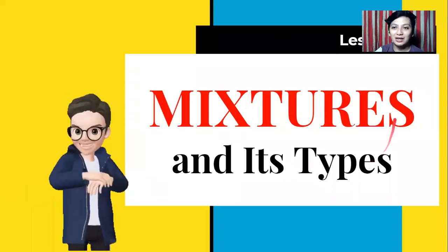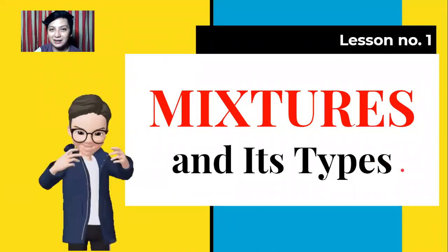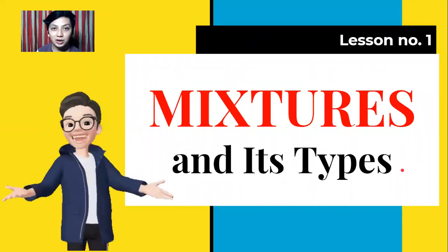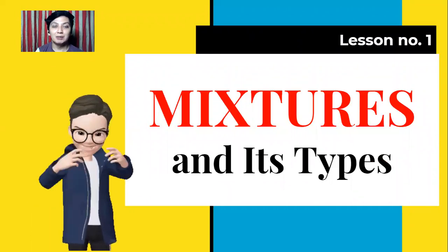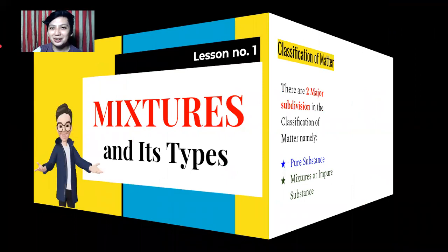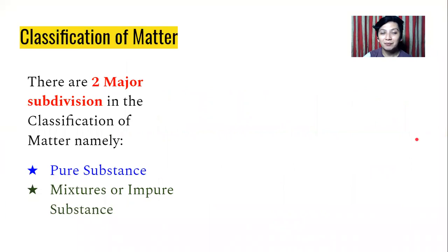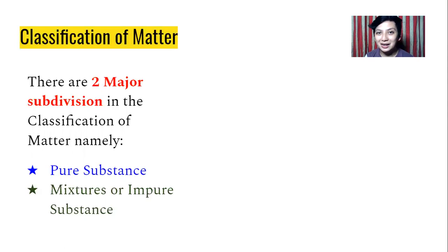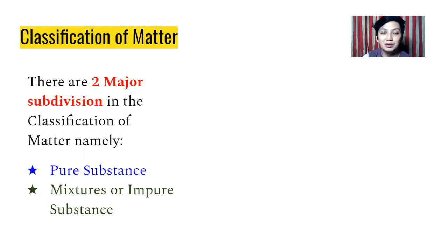To start with lesson number one, we are going to tackle mixtures and their types because matter is very diverse. We will specifically identify what type a mixture is. To begin, we will first classify matter, because we discussed previously that we can classify matter based on whether you can physically separate it or not. You should watch the week number four introduction video included in your Google Classroom.